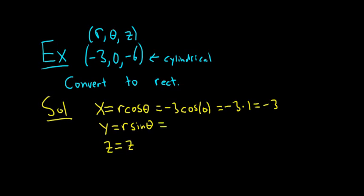Here we get r is -3, so -3 sine of 0, and that's equal to -3. The sine of 0 is 0, so we get -3 times 0, so we get 0. And z is equal to z, so z is -6.